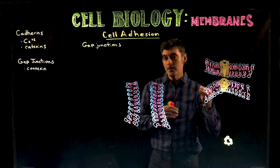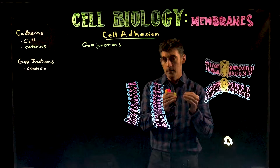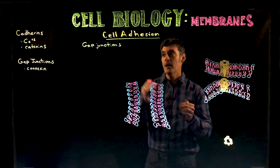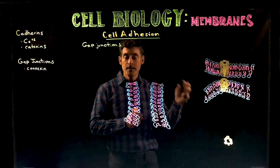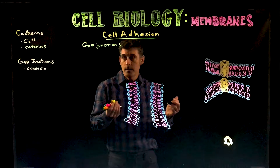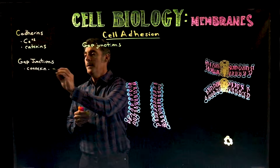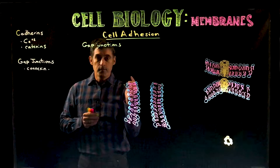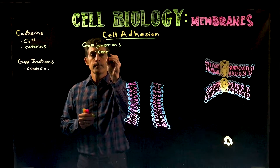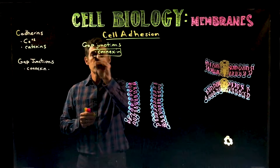To actually be a true tissue, one characteristic a tissue has to have are structures called gap junctions joining the cells within that tissue type. Gap junctions are made up first of transmembrane proteins called connexins. Connexin is the transmembrane protein.